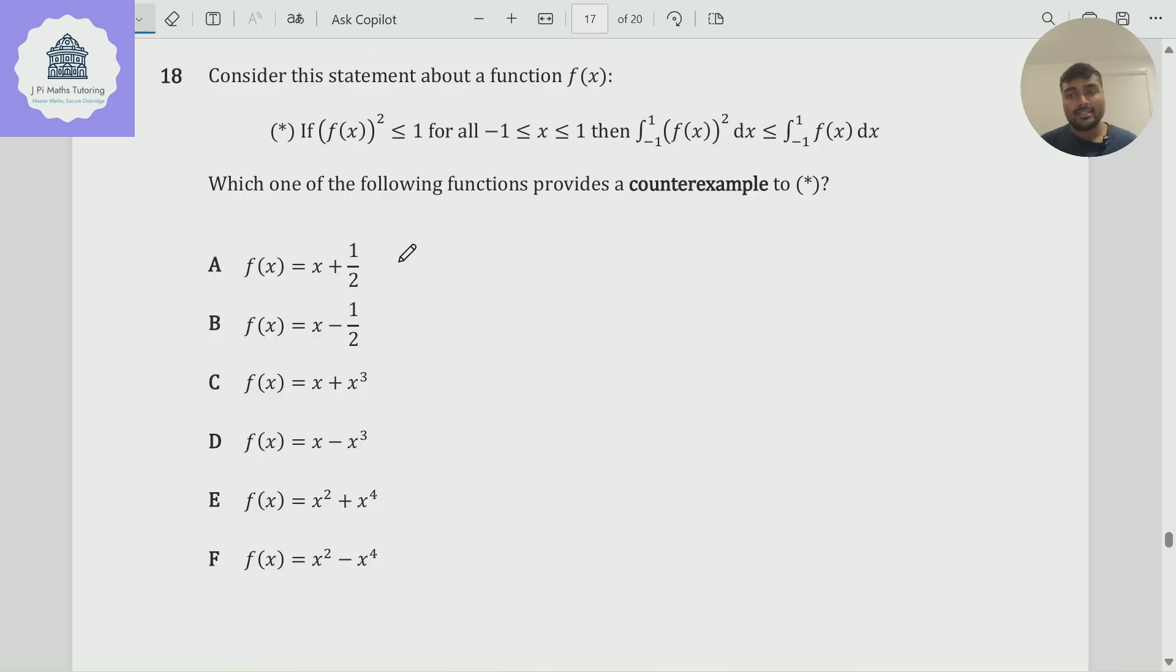A counterexample to a statement is something that adheres to the conditions of the statement but doesn't adhere to the conclusions of the statement. If that makes no sense, let's have a look at this statement. We've got an if part - this bit is the condition - and we've got a then part - that bit is the conclusion.